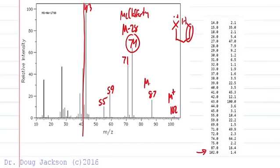What's 87? It's M minus 15, so we know that's loss of methyl. 71: 102 minus 71 is 31. This one tells us something. The only way to get 31 is oxygen 16 plus 15 is 31. An ethyl group would be 29, but the only way to get to 31 is to have a methoxy loss here.